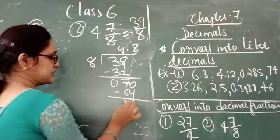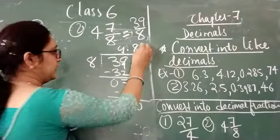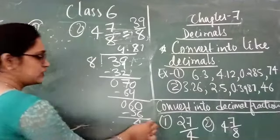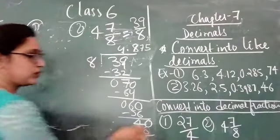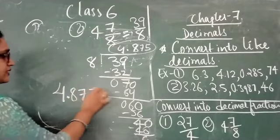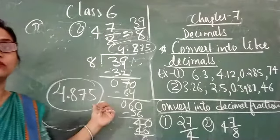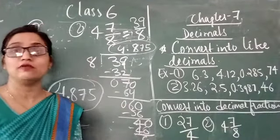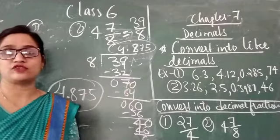Then it becomes 60. 8 sevens are 56, 60 minus 56 is 4. It becomes 40. 8 fives are 40, 40 minus 40 is 0. The quotient we are getting is 4.875. 4.875 is a decimal fraction of 39 upon 8. For converting a fraction into a decimal fraction, we just divide it directly and get the answer with no remainder left. Thank you.